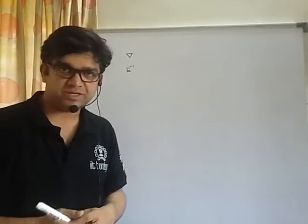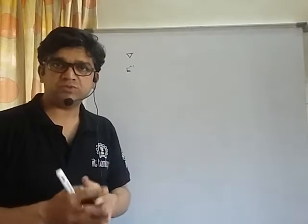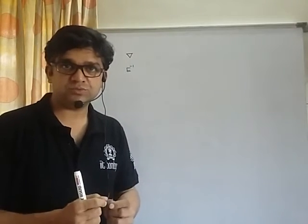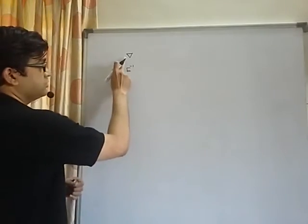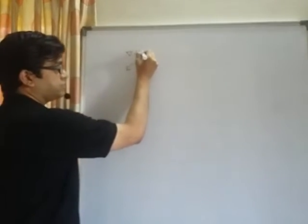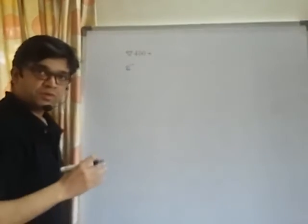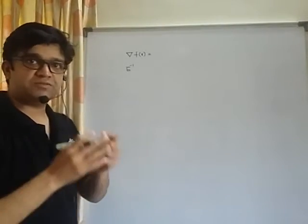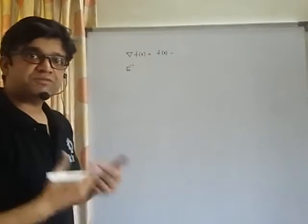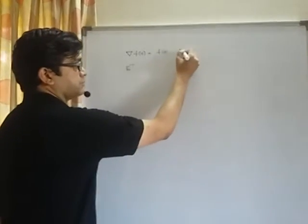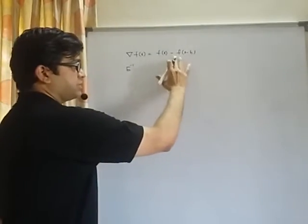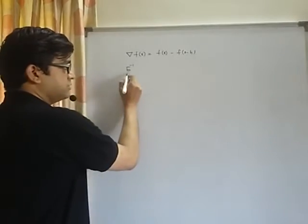Hi friends, welcome to Spectrum Academy. This is part 2 video lecture on numerical methods for engineering semester 2 mathematics. This operator is called nabla (∇). When it is operated on a function f(x), it gives the difference between the current value and the previous value — the current value is f(x) and the previous value is f(x - h).